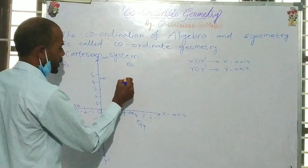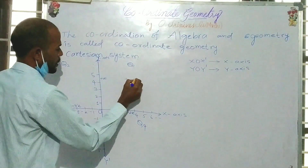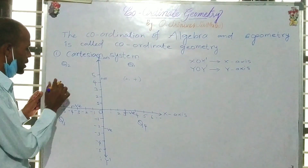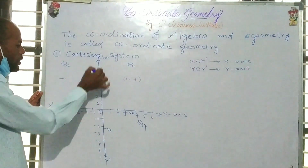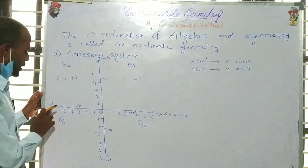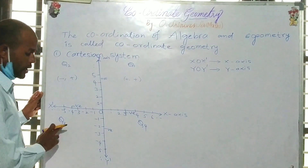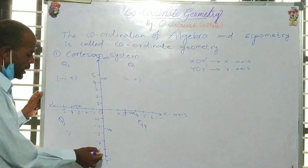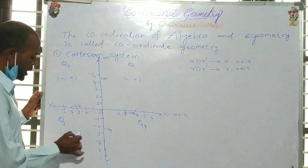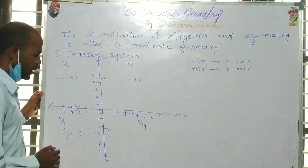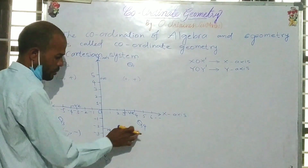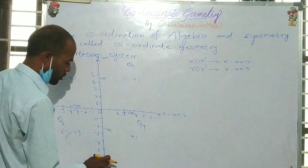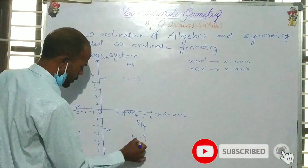In Quadrant 1, the x-coordinate is positive and y-coordinate is positive, so it is plus, plus. In Quadrant 2, x-coordinate is negative and y-coordinate is positive, so minus, plus. In Quadrant 3, both are negative, so minus, minus. In Quadrant 4, x-coordinate is positive and y-coordinate is negative, so plus, minus.